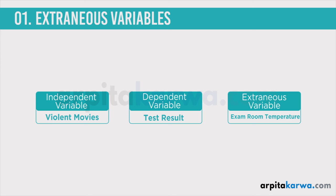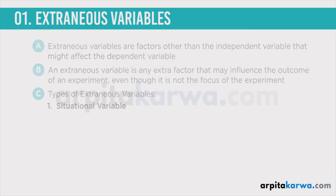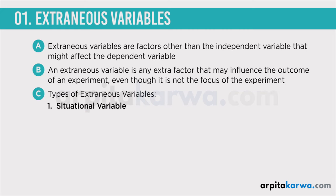Situational variables should be controlled so they are the same for all participants. If I want to find out the actual test results, I need to keep the temperature the same in both rooms. If the temperature is different, it will not be possible to tell whether a student is not performing well because of the violent movie or because of the temperature. So my whole experiment will be wrong. These are called situational variables — a subcategory of extraneous variables.